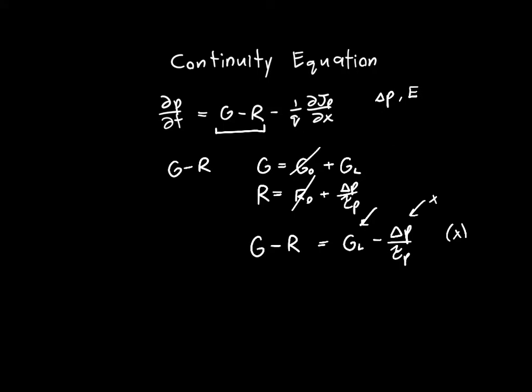Now let's move on to this term, this 1 over q dJp dx, and let's focus in particular just on the Jp term, the hole current term. We know that the hole current can be written as the drift current, Jp drift, plus the diffusion current, Jp diffusion. Recall that the diffusion current is due to the gradient of holes, so it's holes physically diffusing throughout the material. The drift current is in response to an external electric field.